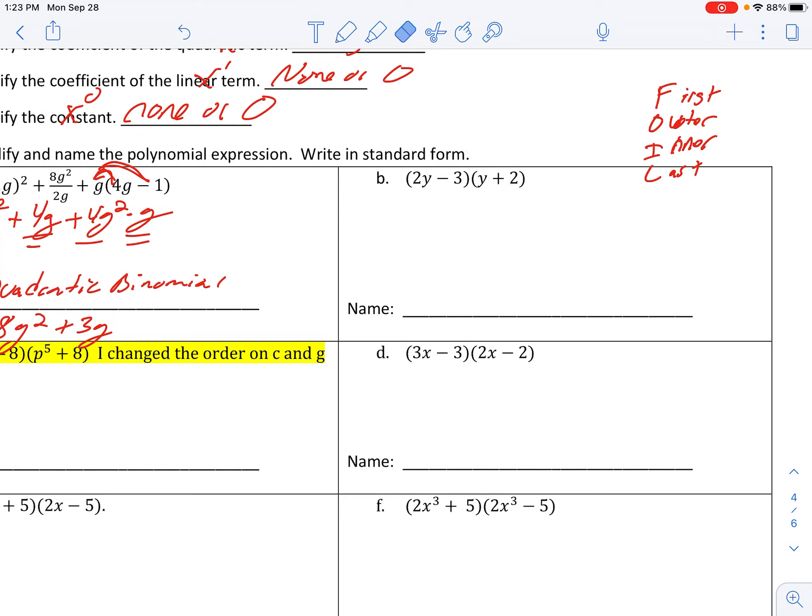Because what I just showed here with my arrows is I am going to just distribute. That's what FOIL does. It's just multiplying. I'm going to take 2y times 1y to get 2y squared. I'm going to take 2y times 2. And then I come around and distribute the negative 3. Negative 3y and then minus 6.